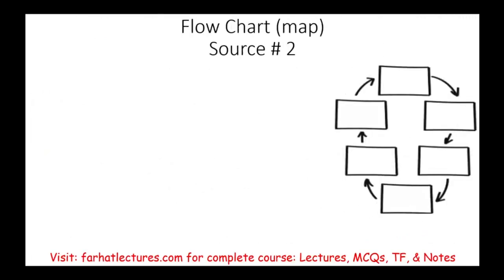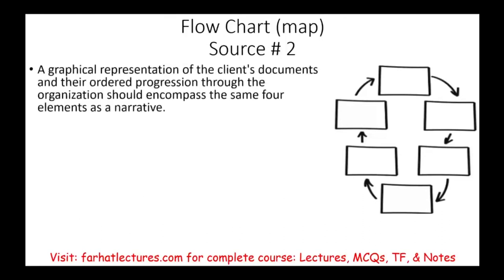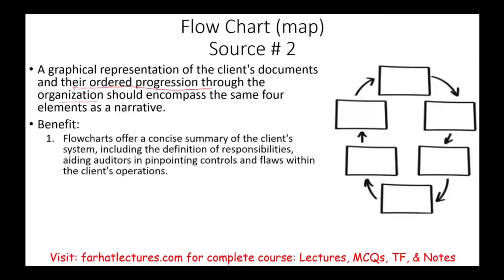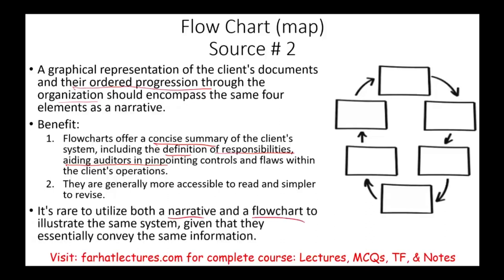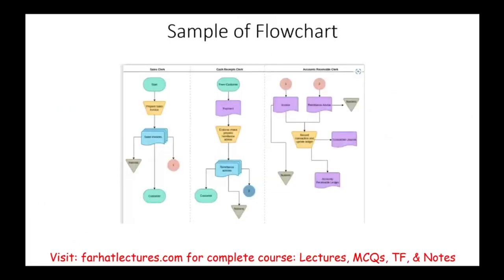The second source to learn about internal control is a flowchart. It's a graphical representation of the client's documents and their progression through the organization, covering the same four elements as the narrative: initiation, processing, documents and records, and controls. The benefit is that it offers a concise summary — all on one or two pages rather than many pages of narrative. Flowcharts are generally easier to read and simpler to revise, and it's rare for companies to use both narrative and flowchart, as they convey the same information.